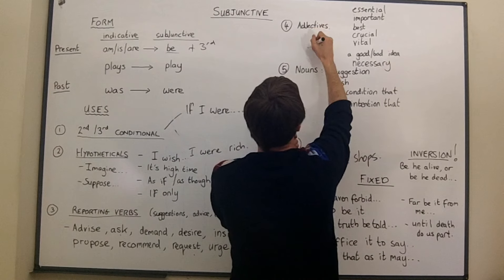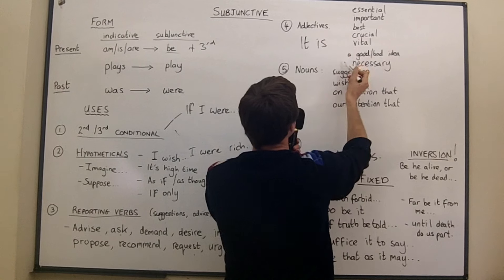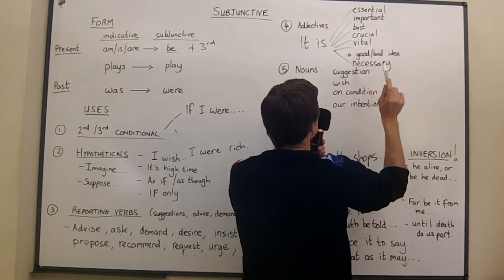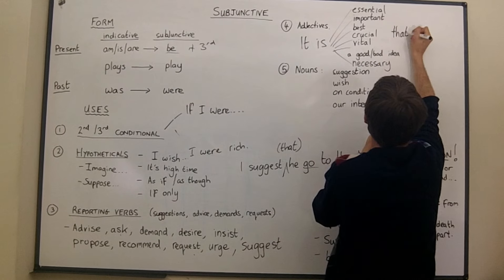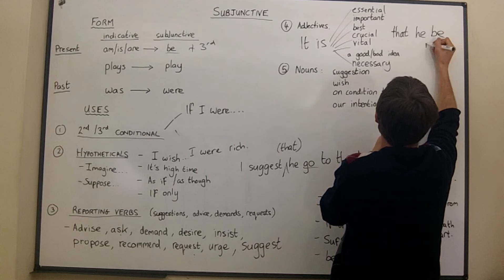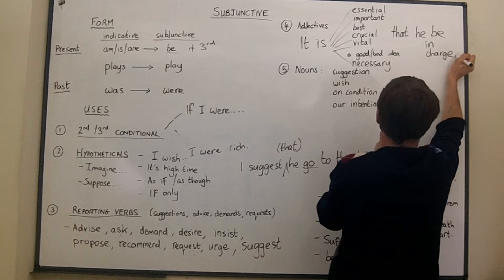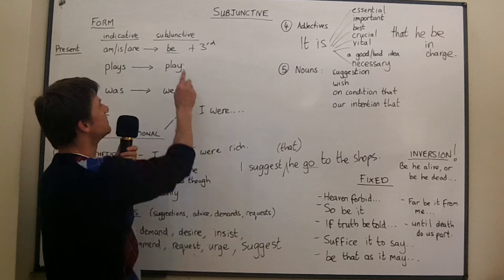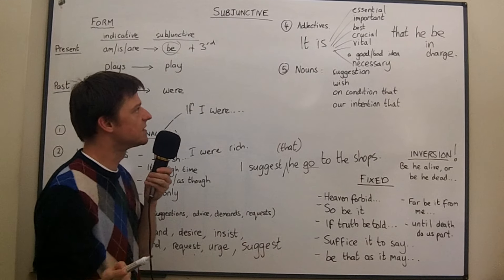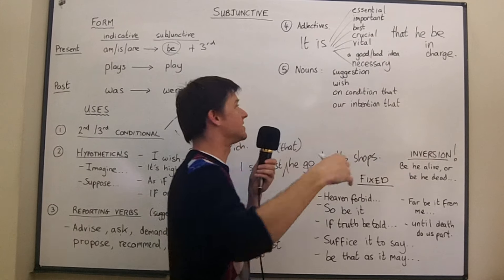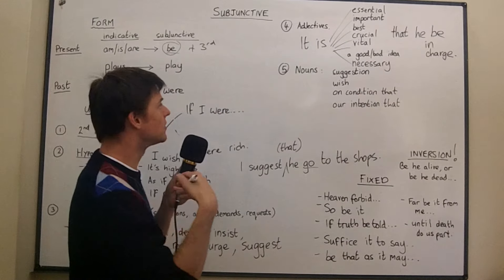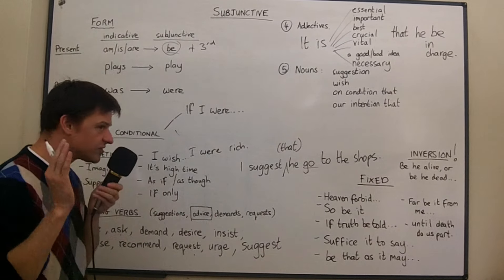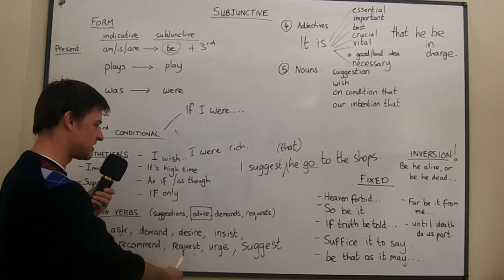Another situation where it's good to use the subjunctive is with expressions like: 'it is essential,' 'it is important,' 'it is best,' 'it's crucial,' 'it's vital,' 'it's necessary that he be in charge of the project.' This is also the present subjunctive. You can also say 'it's a good idea that he be in charge.' Here you're giving advice — saying this should be the case.